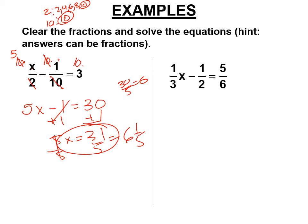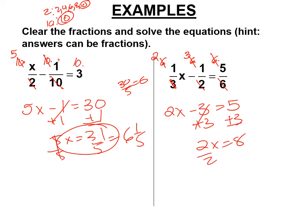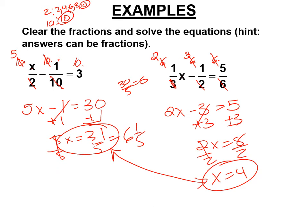We have denominators 3, 2, and 6. What magic number will cancel all of those? Hopefully you picked 6. If you picked 12, that works too because it's a common multiple — you'll get a different equation but it will work. So: 3 divided by 3 is 1, 6 divided by 3 is 2, 2 divided by 2 is 1, 6 divided by 2 is 3, these 6s cancel. We have 2 times x, plus 3 times 1 equals 5, so 2x plus 3 equals 5. Add 3 to both sides: 2x equals 8. Divide by 2: x equals 4.